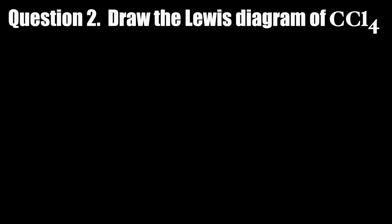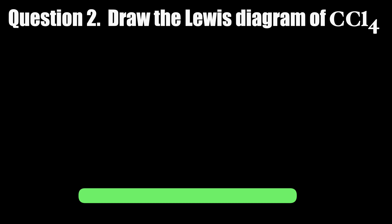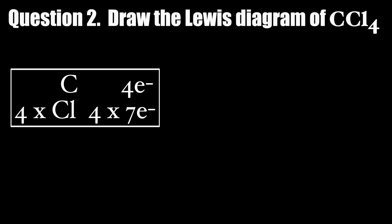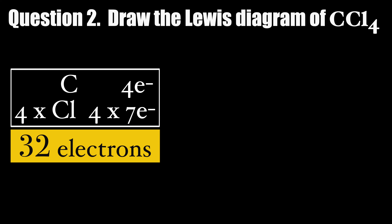Question 2: Draw the Lewis diagram of CCl4. CCl4 has 32 valence electrons. Carbon is the central atom.